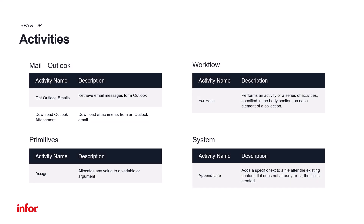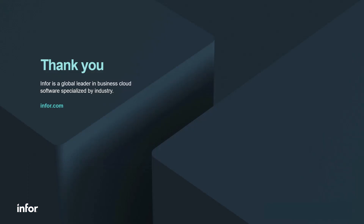During today's tutorial, we created a workflow in Infor RPA Studio using multiple Outlook activities such as Get Outlook Email and Download Outlook Attachments, as well as various other activities such as For Each, Append Line, and Assign. I hope you have enjoyed watching this tutorial. If you wish to see more, visit our YouTube channel where you can find more content.